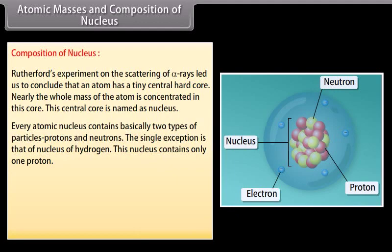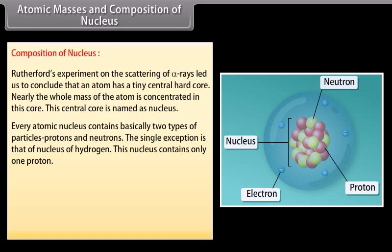Every atomic nucleus contains basically two types of particles: protons and neutrons. The single exception is that of nucleus of hydrogen. This nucleus contains only one proton. The total number of protons in atomic nucleus is equal to total number of electrons in atom. So, the total amount of negative charge present in atom is equal to the total amount of positive charge in the atom. This makes the atom as a whole electrically neutral.